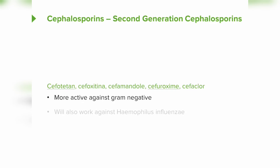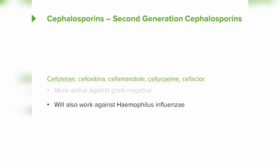The second generation's prototypical agent is cefotitan. These are much more active against gram-negative organisms, and they'll also work against Haemophilus influenzae, one of the major causes of pneumonia. Other agents in this group include cefuroxime. Cefotitan and cefuroxime are the key drugs to know here. Cefuroxime is commonly used in pneumonia treatment.